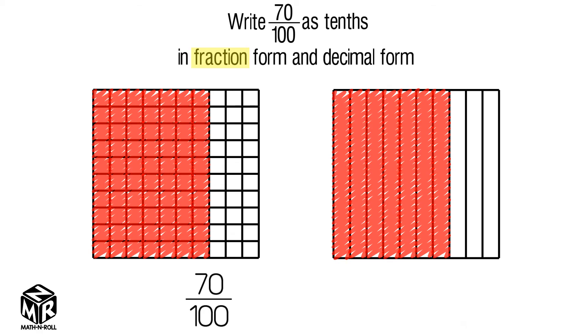So 70 hundredths and 7 tenths are equivalent fractions. To get from 70 hundredths to 7 tenths, we have to divide both the numerator and the denominator by 10.